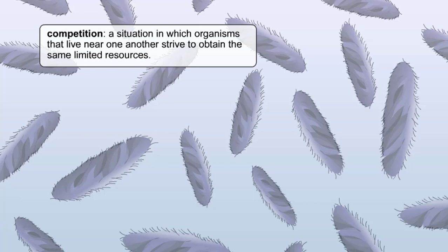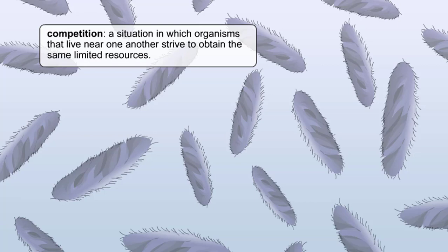For example, let's take a look at two competing species of paramecium, a single-celled organism that feeds on bacteria. If we raise each of these species in isolation, both populations will thrive,